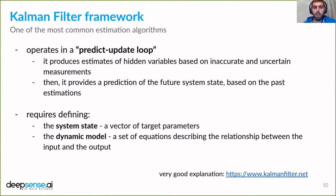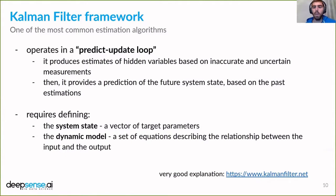The Kalman filter is one of the most widely used estimation algorithms. It operates in a loop consisting of two steps: predict and update. First it produces estimates of hidden variables based on measurements, then based on past estimations it provides a prediction of the future system state. To use the Kalman filter for your estimation problem, you have to define at least two things: the system state — a vector of target parameters you want to model — and the dynamic model, a set of equations describing the dynamics of your system, meaning the relationship between input and output.